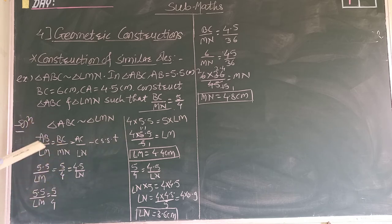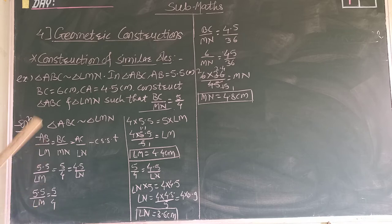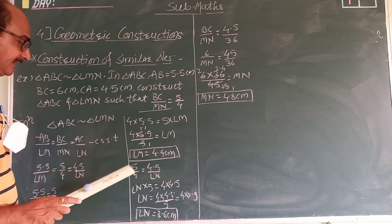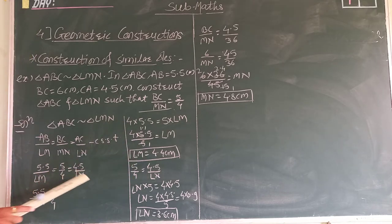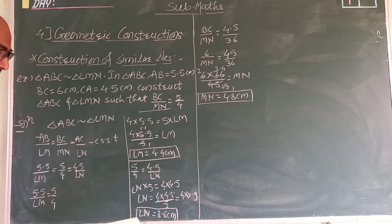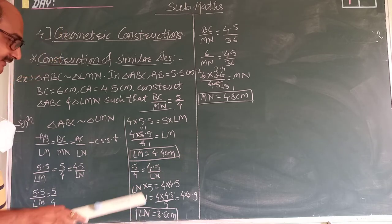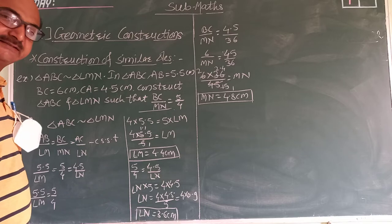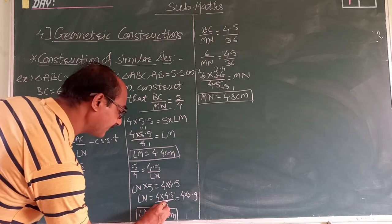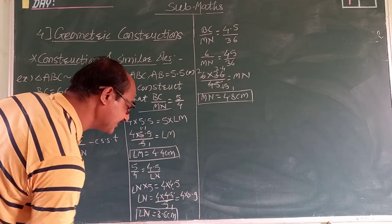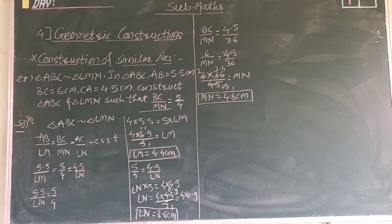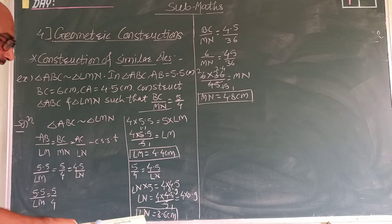Since AB and AC are given, we take these two ratios and use cross multiplication to find LM. By cross multiplication, LM comes out to 4.4. Similarly, taking the ratio with AC and doing cross multiplication gives LM as 3.6. Here, four goes to this side, five multiplied — after division you get 0.9, so LM is 3.6. Now we have found two values.